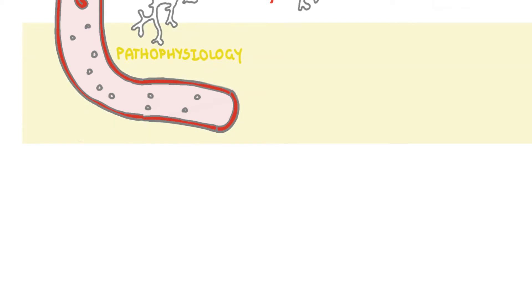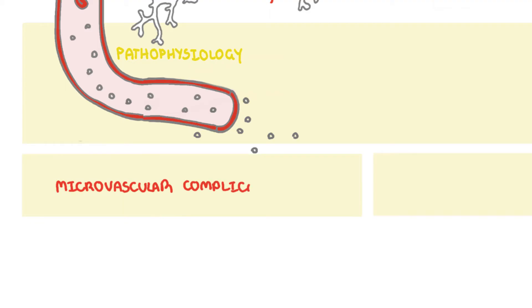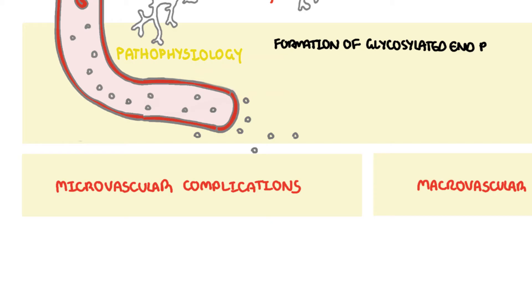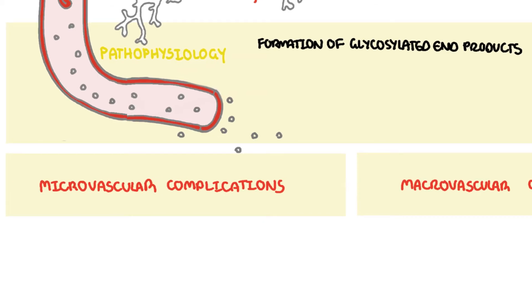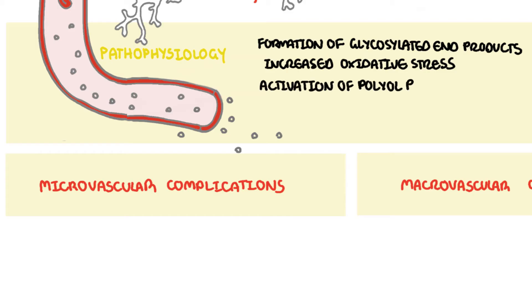Diabetes mellitus is the number one cause of end-stage renal disease, blindness and non-traumatic lower extremity amputation. Chronic hyperglycemia is an important cause of complications of type 1 and type 2 diabetes mellitus, which include microvascular and macrovascular complications. These complications arise from: 1) formation of advanced glycosylated end products, which accelerates atherosclerosis and endothelial dysfunction; 2) increased oxidative damage causing cell injury and dysfunction; 3) activation of polyol pathways with accumulation of sorbitol, which is toxic; and 4) platelet dysfunction associated with increased platelet aggregation.